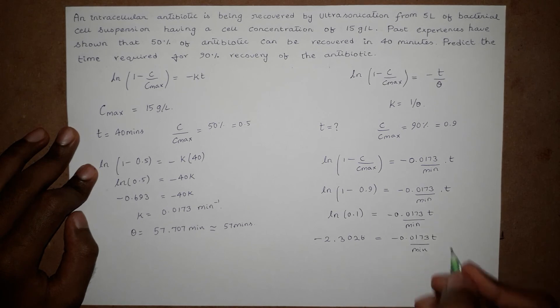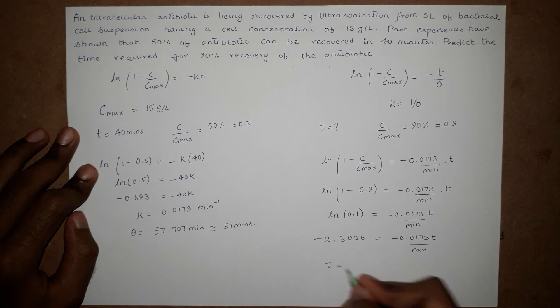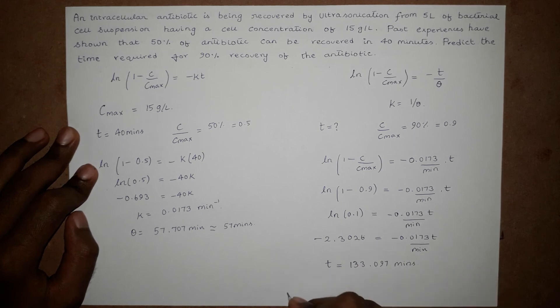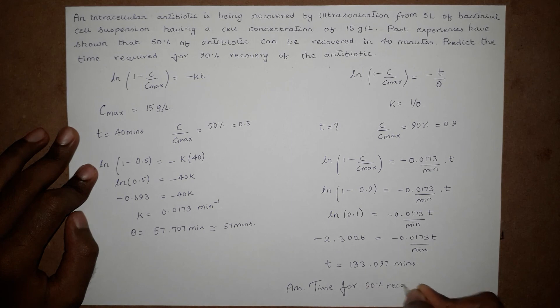Keeping T on one side, the time came around 133.097 minutes. So the answer: time for 90% recovery equals 133 minutes. Thank you.